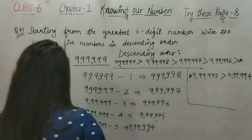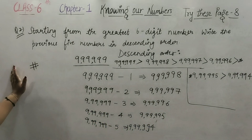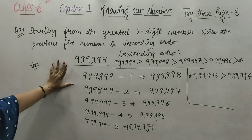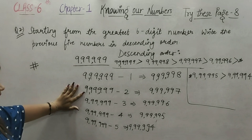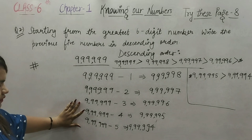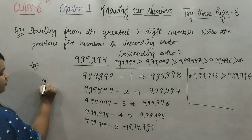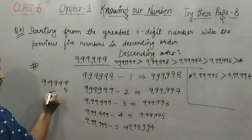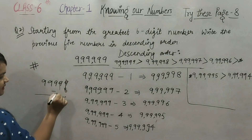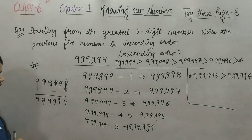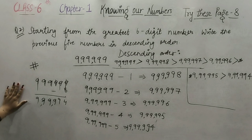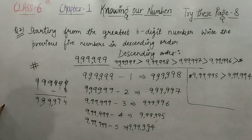Question में again बता देती हूँ — 6-digit greatest number 999999 होता है। उससे previous 5 numbers लिखने थे। तो हमने इस digit में से पहले 1 minus किया, फिर 2, फिर 3, फिर 4, और 5 minus किया। 9 minus 5 is 4 — as it is। फिर उन्हें descending order में लगाया: सबसे बड़ा, फिर उससे छोटा, फिर उससे छोटा, और अंत में सबसे छोटा।